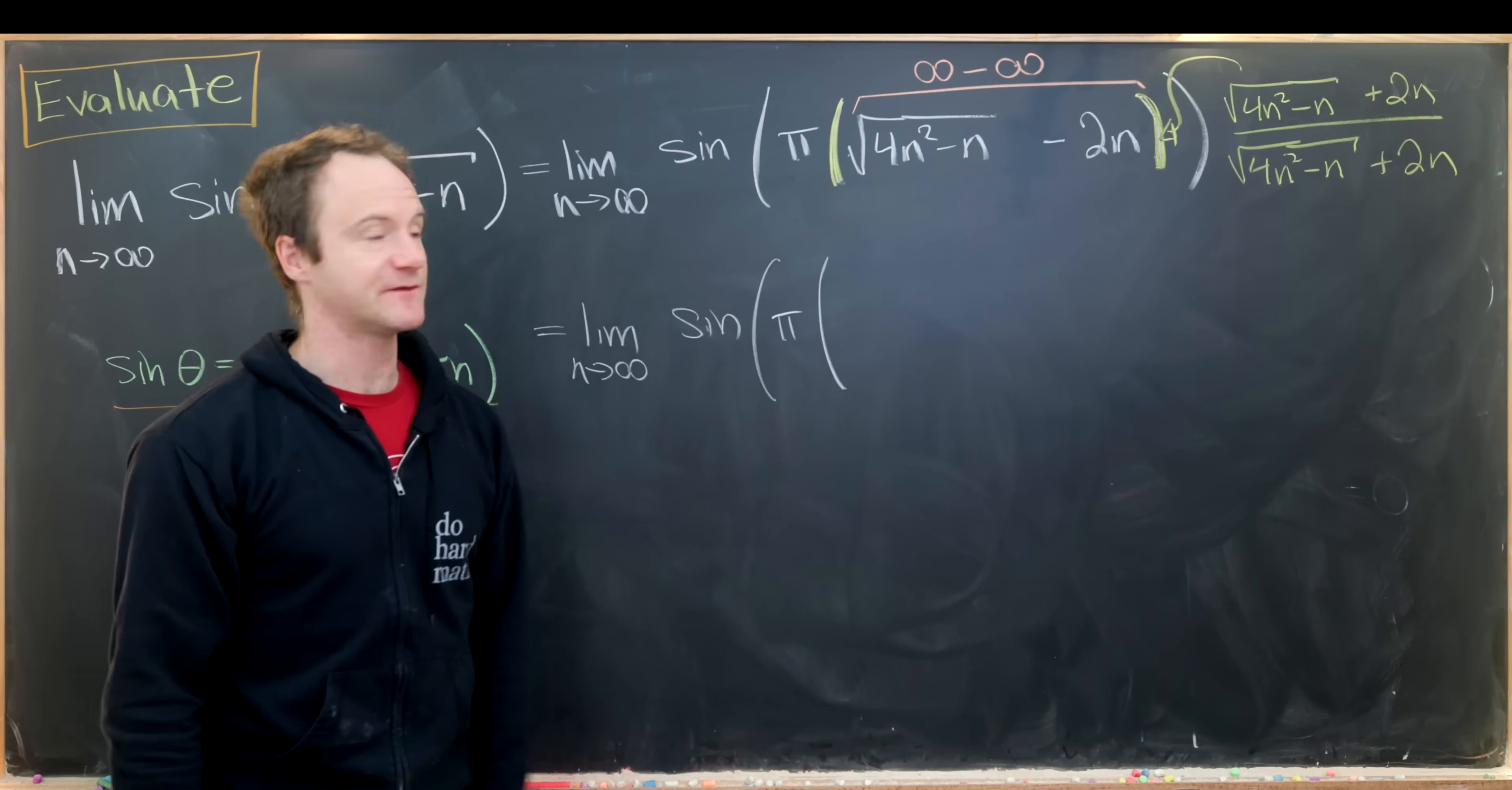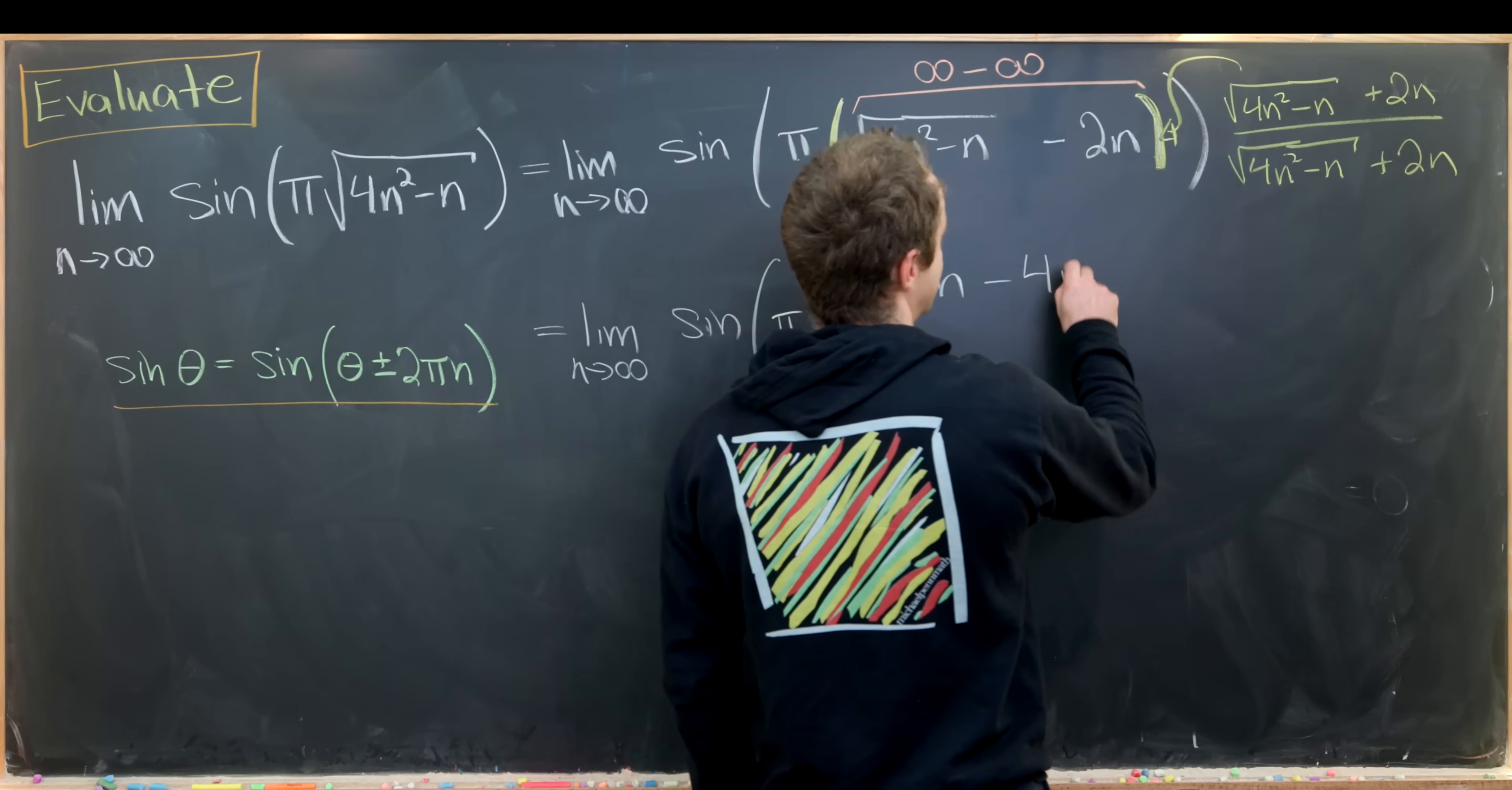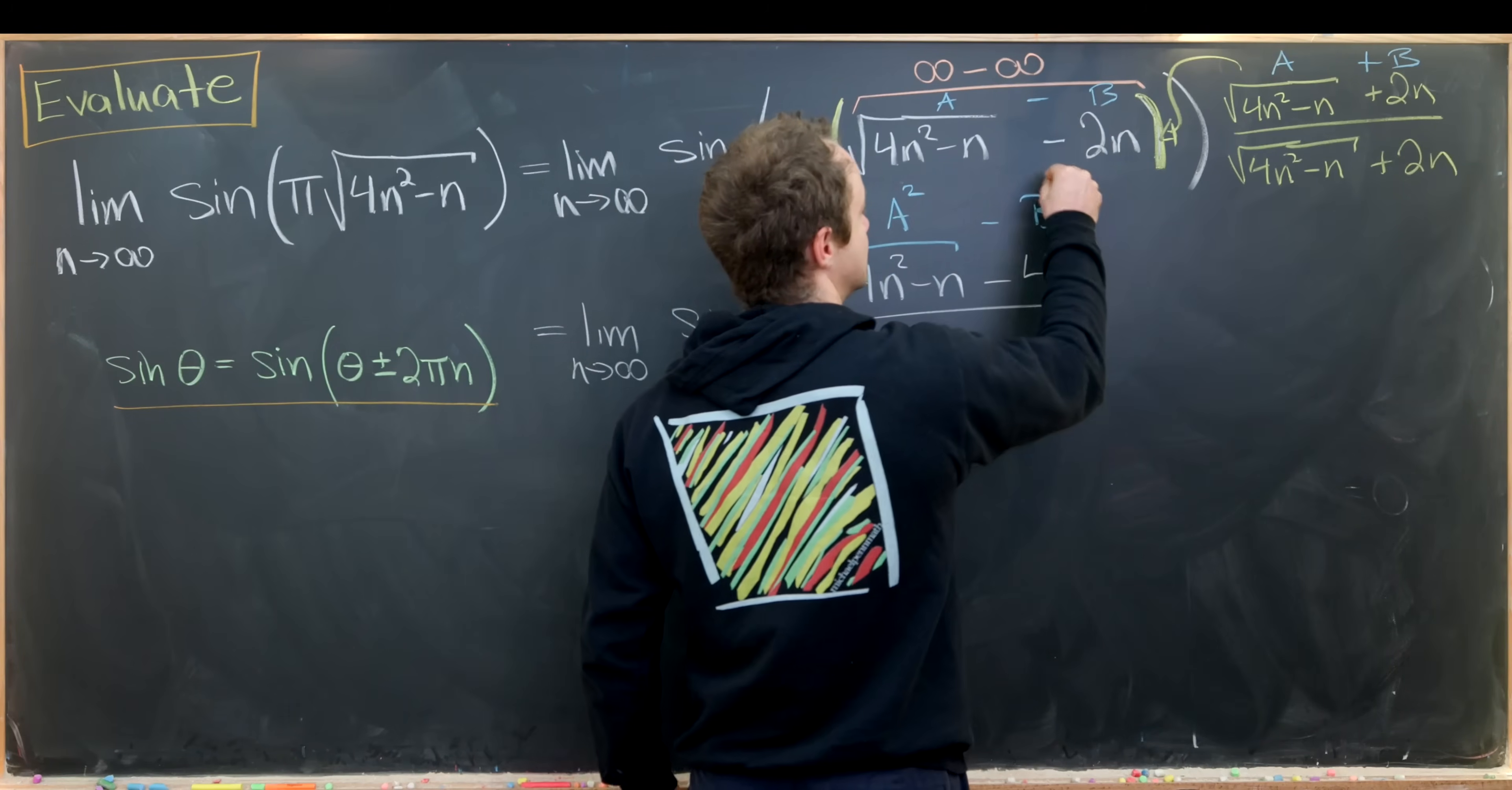In the numerator we have a difference of squares scenario. That's because we've got this minus this and then this plus this. Those are multiplying together like a minus b times a plus b. That clearly gives us a squared minus b squared. In this case it'll be 4n squared minus n and then minus 4n squared. So if this is a plus b and this is a minus b this is a squared minus b squared.